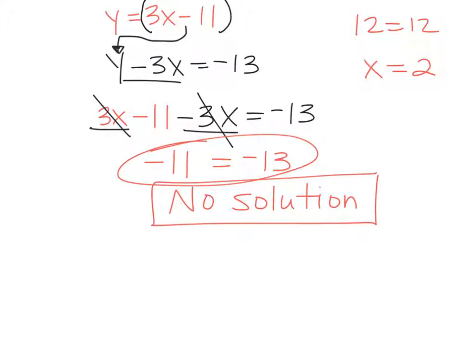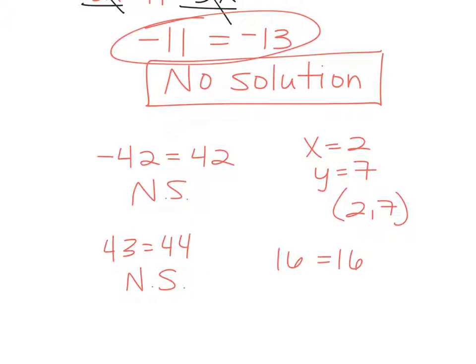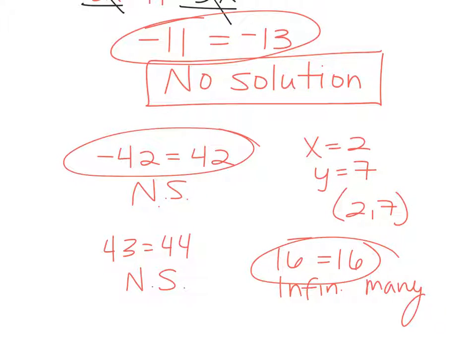Questions on no solution versus infinitely many? Do we get that? Okay, so let's say we solved and your answer came out to negative 42 equals 42. What would your answer be? No solution. It's false, right? This would be no solution. What if I said x equals 2 and y equals 7? One solution. That is your answer. Two, seven, right? What if it came out to 43 equals 44? No solution, right? That's false. What if it came out to 16 equals 16? How many? Infinitely many.